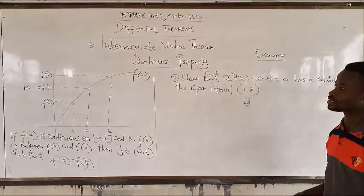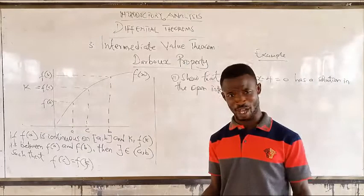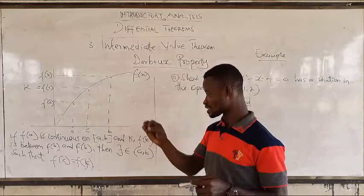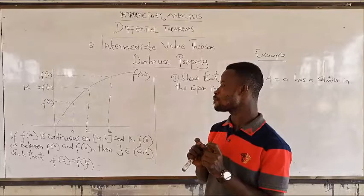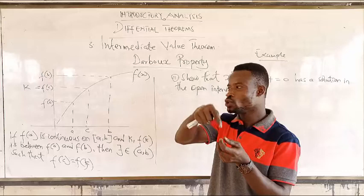All that the Daboss property is saying is very simple. It's saying that if we have a function and the function is continuous on a closed interval, then it is also continuous on the open interval, and there will be exactly a value between it.